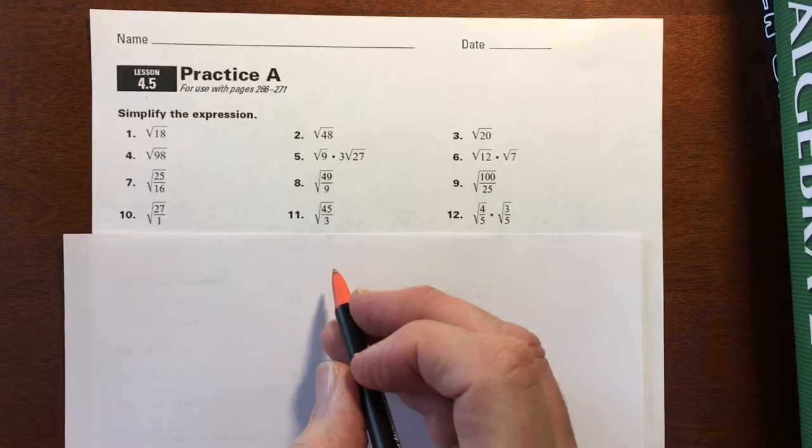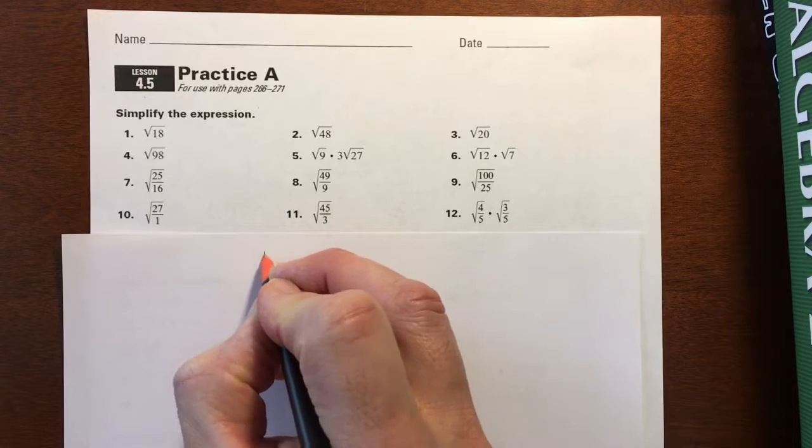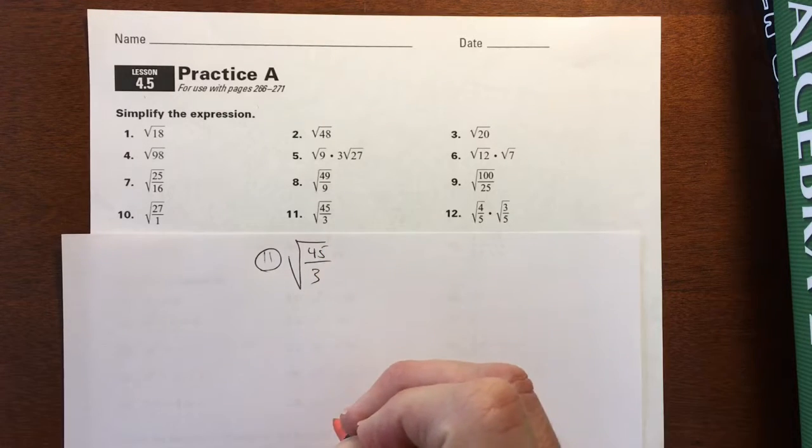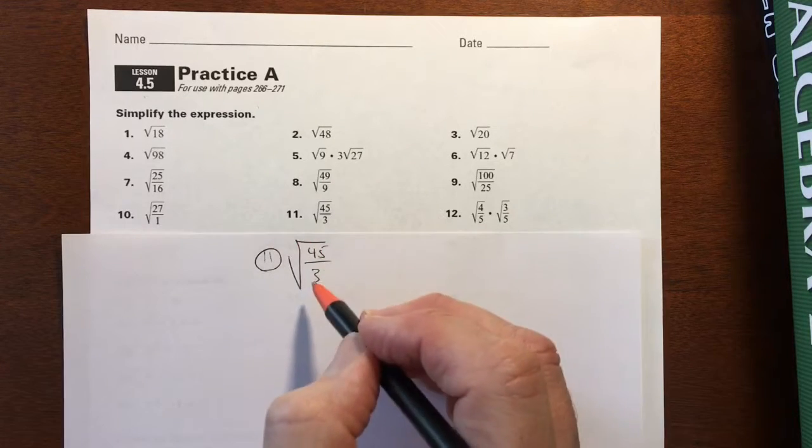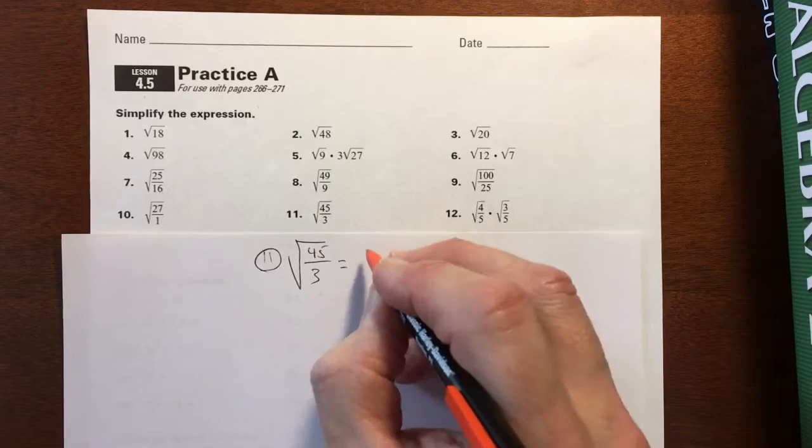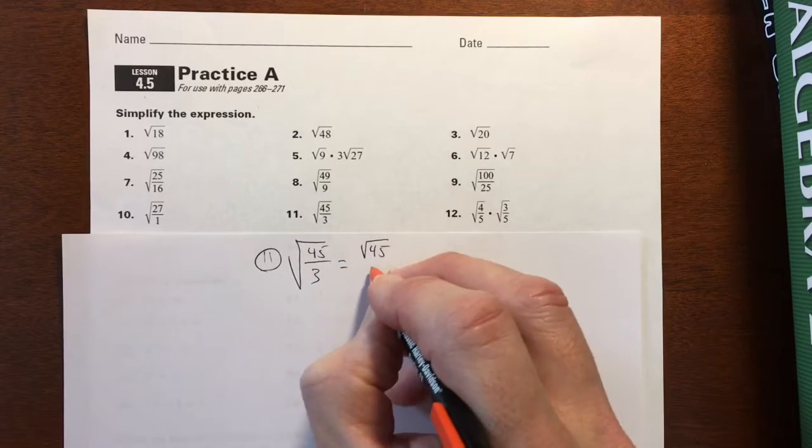To start, we'll start with number 11. It is square root of 45 over 3. Again, we can split the radical both as products or as quotients. So this would be equal to square root of 45 over square root of 3.